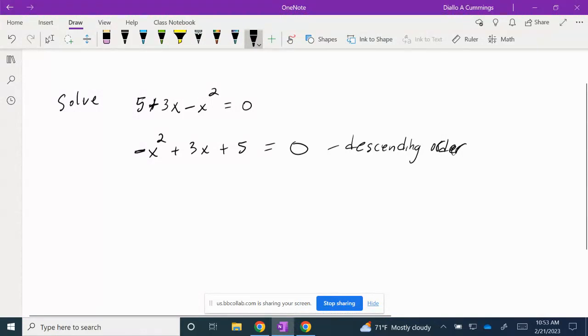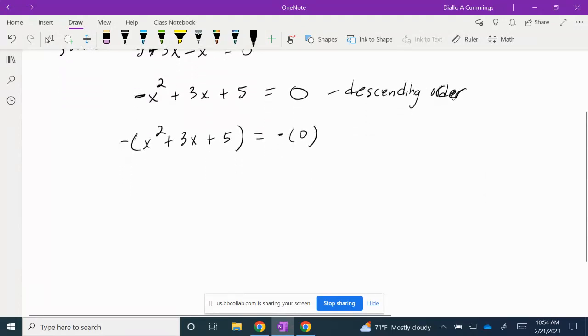Next, I'm going to make the squared variable positive. In order to do that, I'm simply going to multiply both sides by a negative. Remember from the property of equality, whatever we do to one side, we must do the exact same thing to the other side.